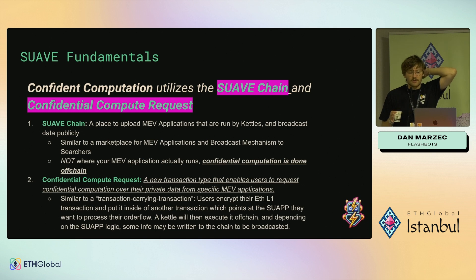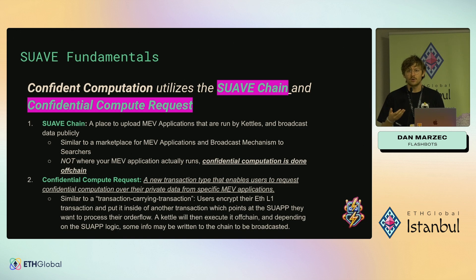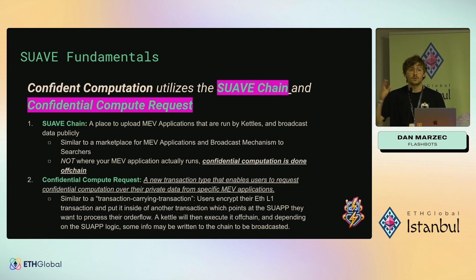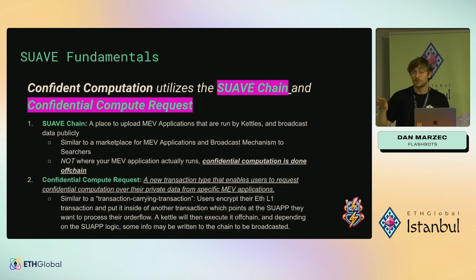Confidential computation utilizes the Suave chain and confidential compute requests. The Suave chain is like a marketplace — you can think of it like the app store. When you go to the app store on your phone, you download an app and then start running it locally. Similarly, you upload Solidity contracts to Suave with some additional precompiles to do cool things like simulating bundles or sending them to a block builder. All the kettles keep in sync with the latest contracts, and when you do a computation it uses the program from the Suave chain, but doesn't execute the computation on-chain.